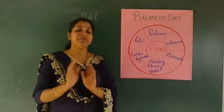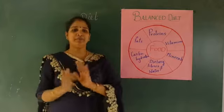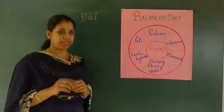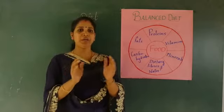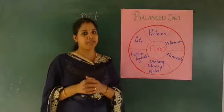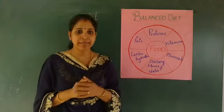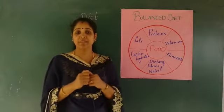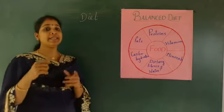The need of nutrients is different for different persons, so the balanced diet is also different for different persons. For example, take a construction worker and a lawyer. A construction worker does more physical work, so needs more energy than a lawyer. Therefore, the balanced diet of a construction worker needs more energy-giving substances, which are carbohydrates and fat.